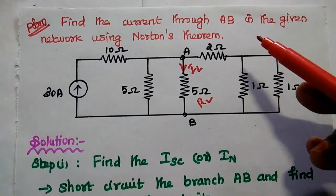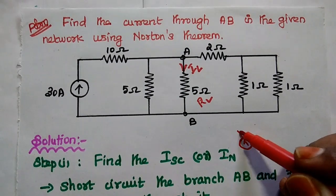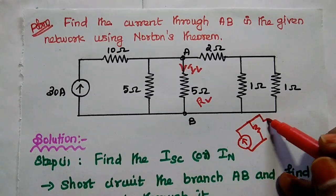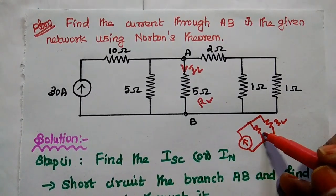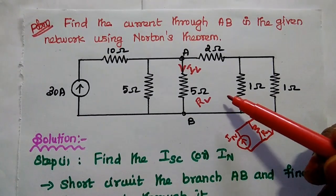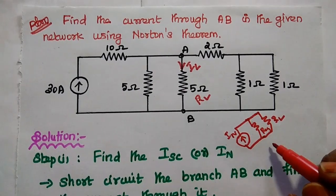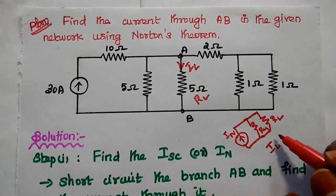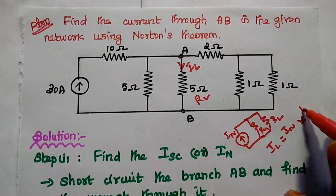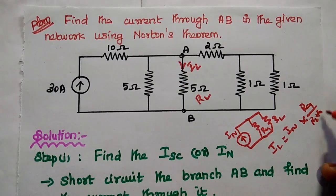So here we are going to use Norton's theorem. The equivalent circuit consists of a current source in parallel with one equivalent resistance, connected with the load resistor RL. This is the equivalent resistance and this one is the Norton current. Using the current division technique, IL equals the total current IN multiplied by the equivalent resistance divided by the sum of RL and the equivalent resistance.